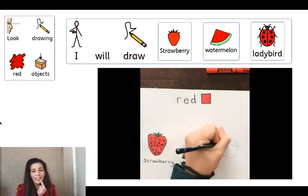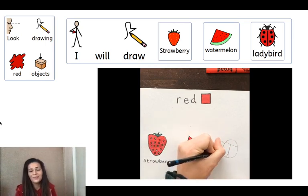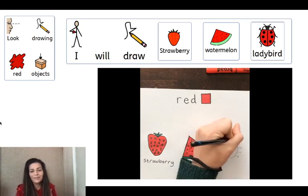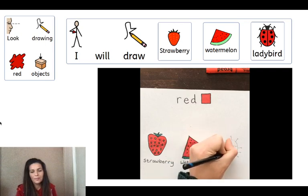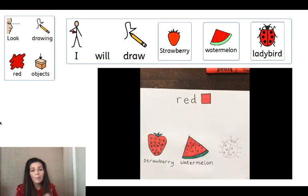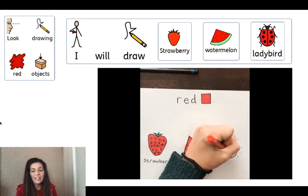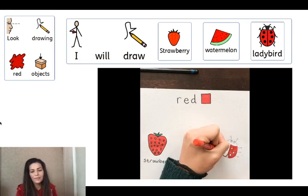Now the last red thing Lily's going to draw is a ladybird. I draw in pencil first and I can rub it out if I make a mistake. It's okay. We can always try again. The more we practice, the easier it gets.